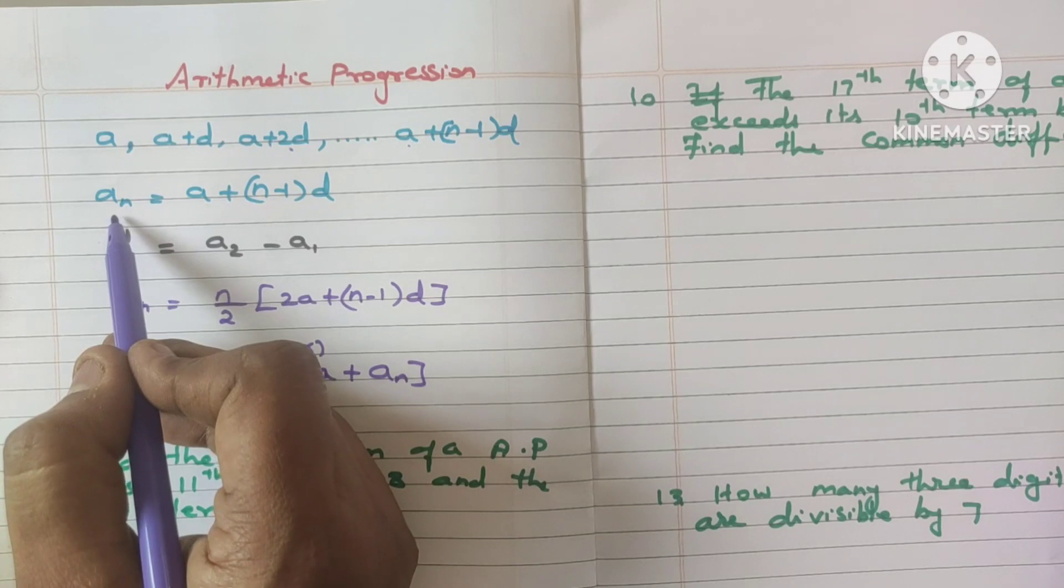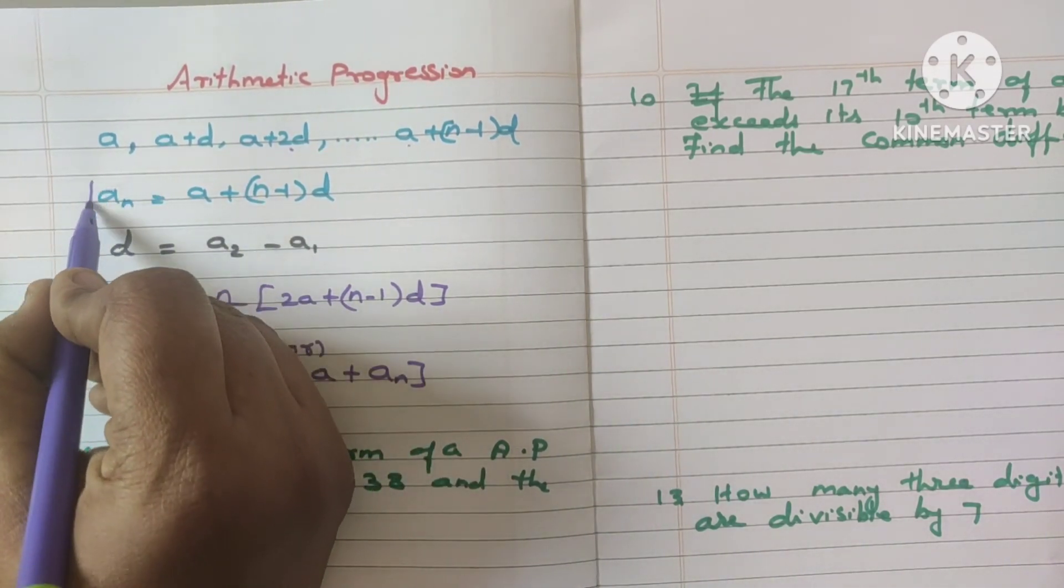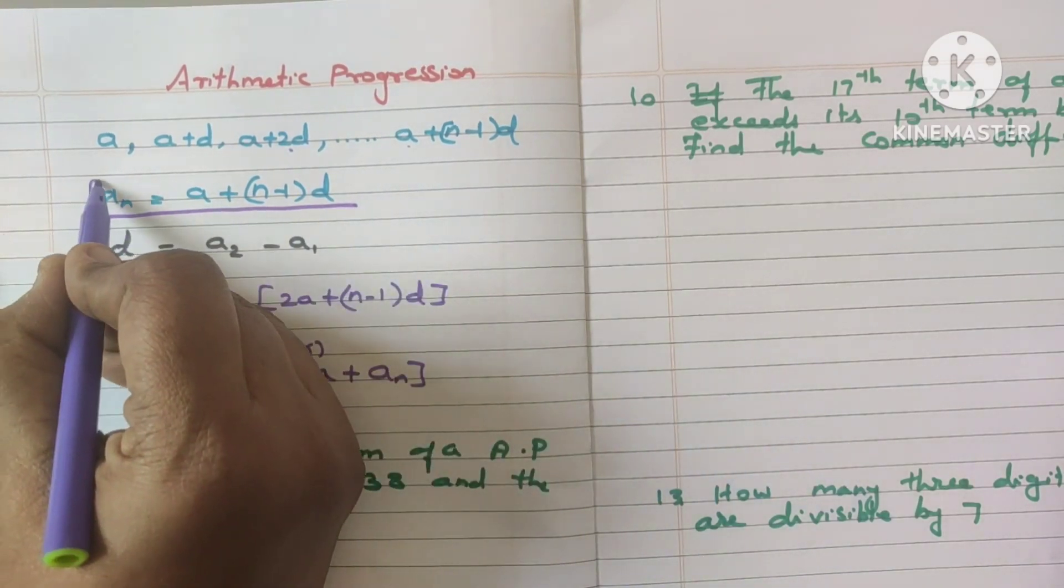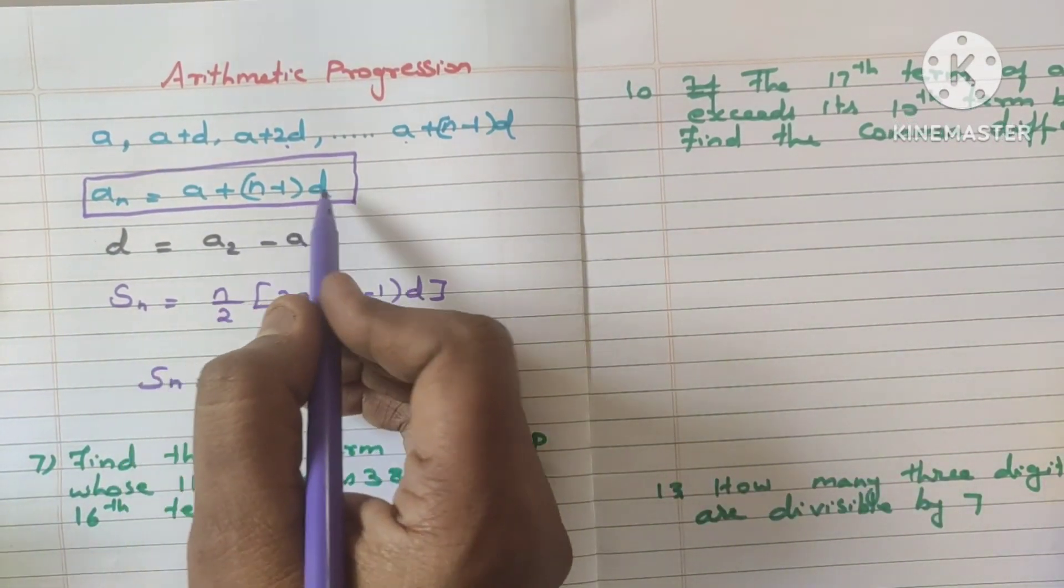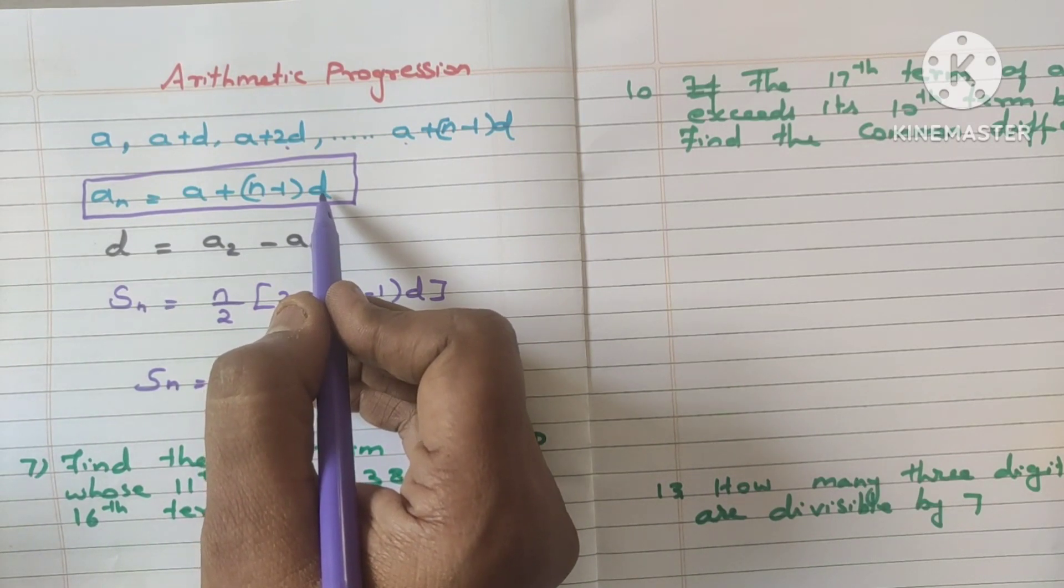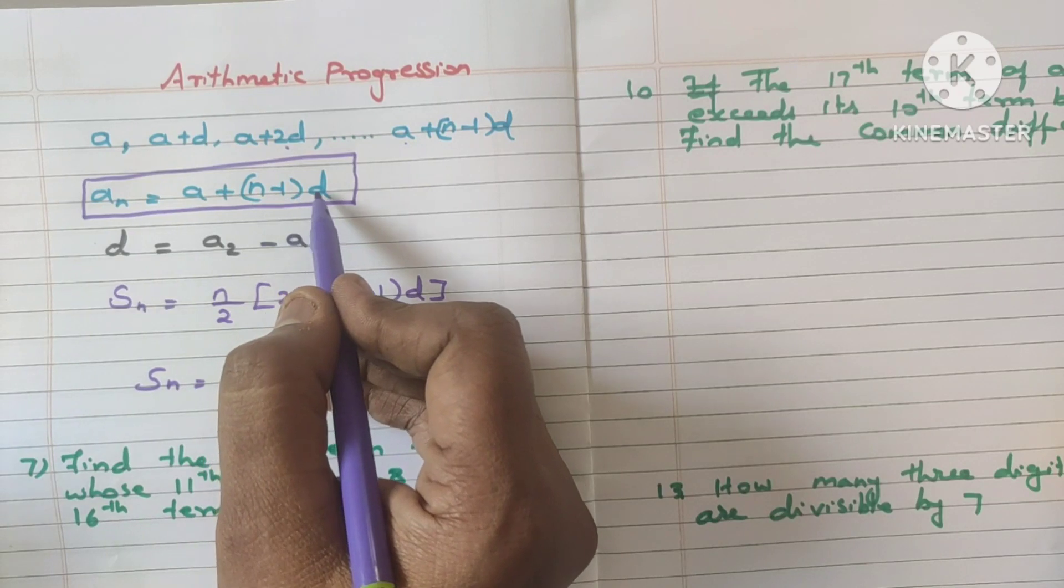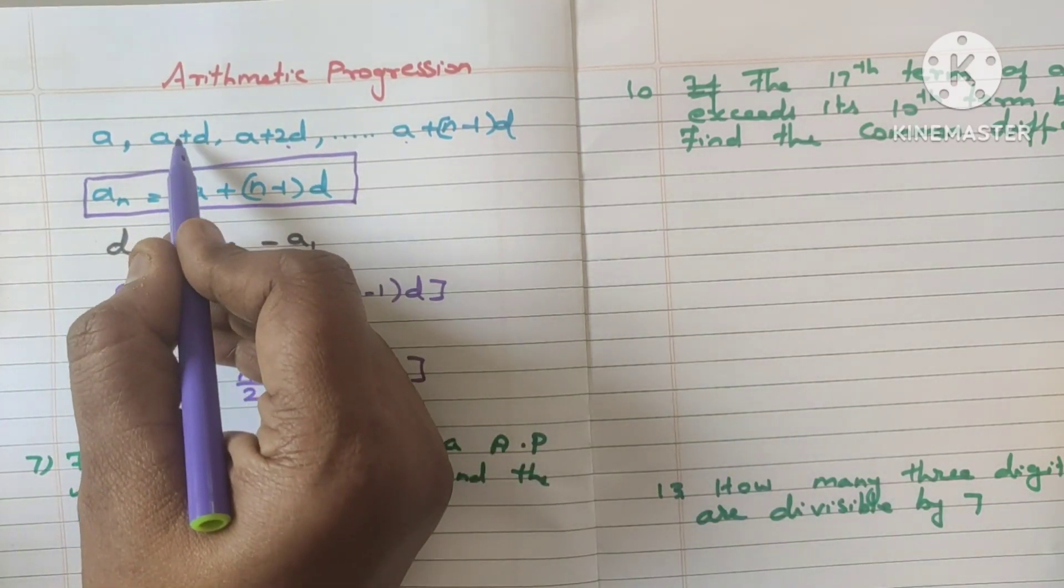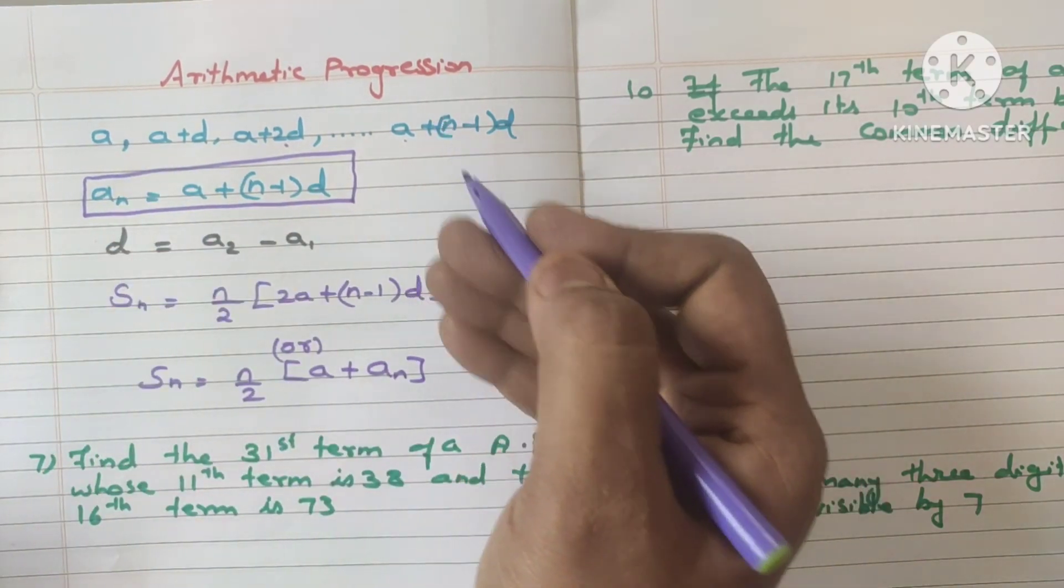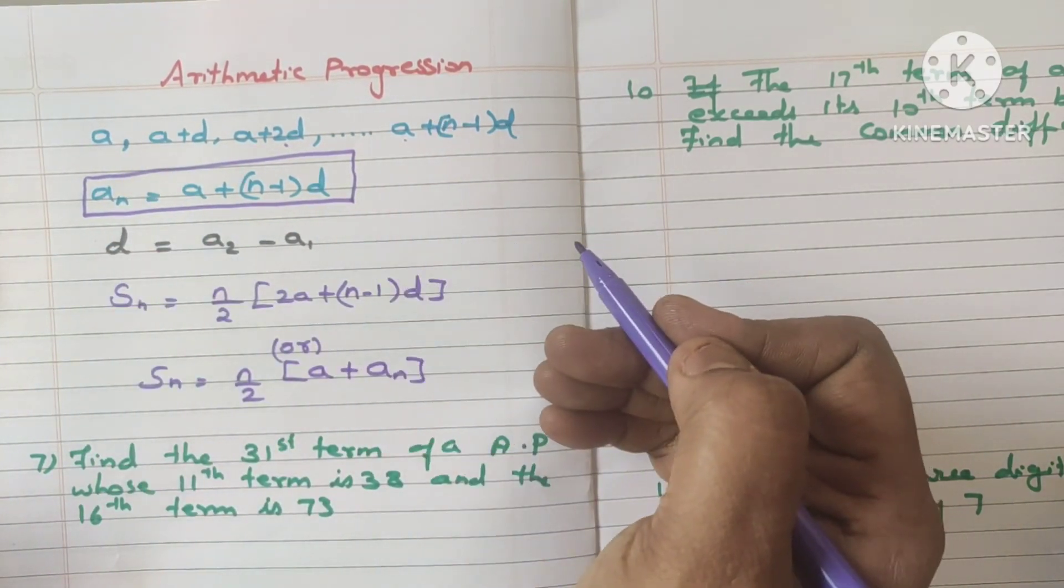The nth term formula is an is equal to a plus n minus 1 into d. This formula you should remember to find the nth term. Next, what is d? d is the common difference and a is nothing but the first term. d, how to find the d value? The difference between the second term and the first term. These details I have already uploaded in the previous video. Please check it.